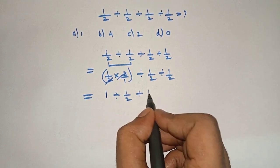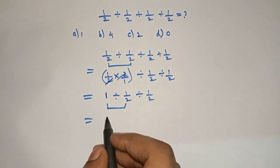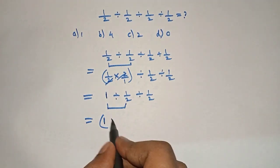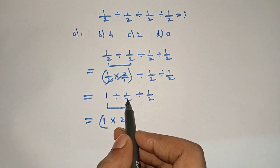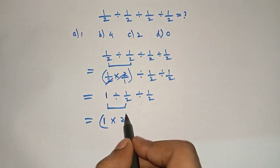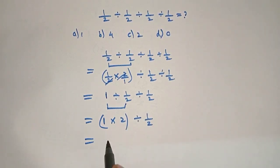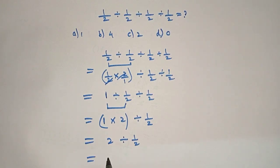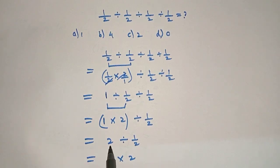Now we solve the next term: 1 divided by 1/2 can be written as 1 multiplied by 2 — we multiply and take the reciprocal — which gives us 2. Then 2 divided by 1/2 becomes 2 multiplied by 2, because we again take the reciprocal to divide by 1/2.